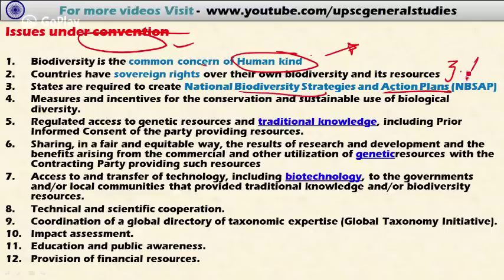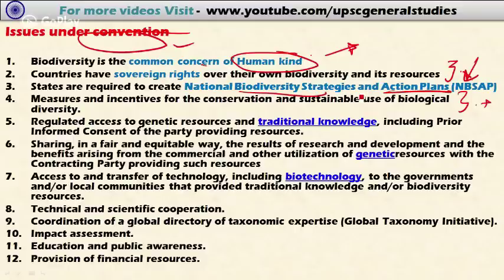States are required to create national biodiversity strategies and action plans for conservation of biodiversity — a binding obligation for member countries. Measures and incentives for conservation and sustainable use of biodiversity are also covered. The convention provides for regulated access to genetic resources and traditional knowledge, including prior informed consent of the party providing resources.